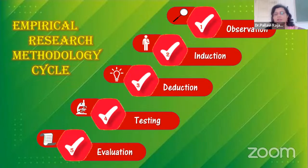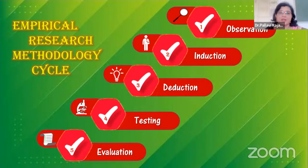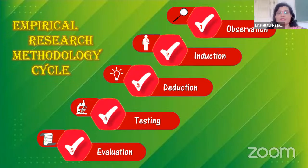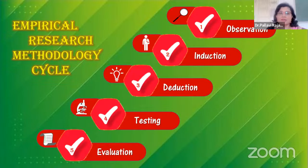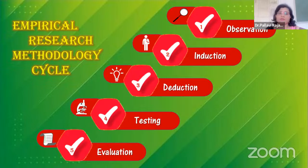The deduction phase helps the researcher to deduce a conclusion out of his experiment. This has to be based on logic and rationality to come up with specific unbiased results. For example, in the experiment, if the flowers kept at a different temperature do not change color, then it can be concluded that temperature plays a role in changing the color of the bloom.